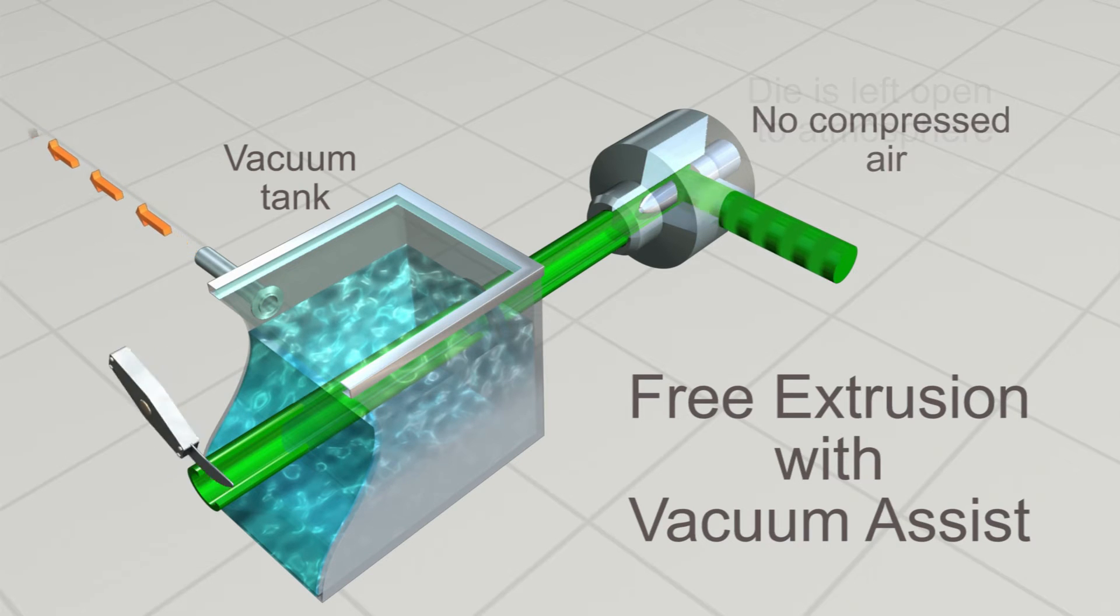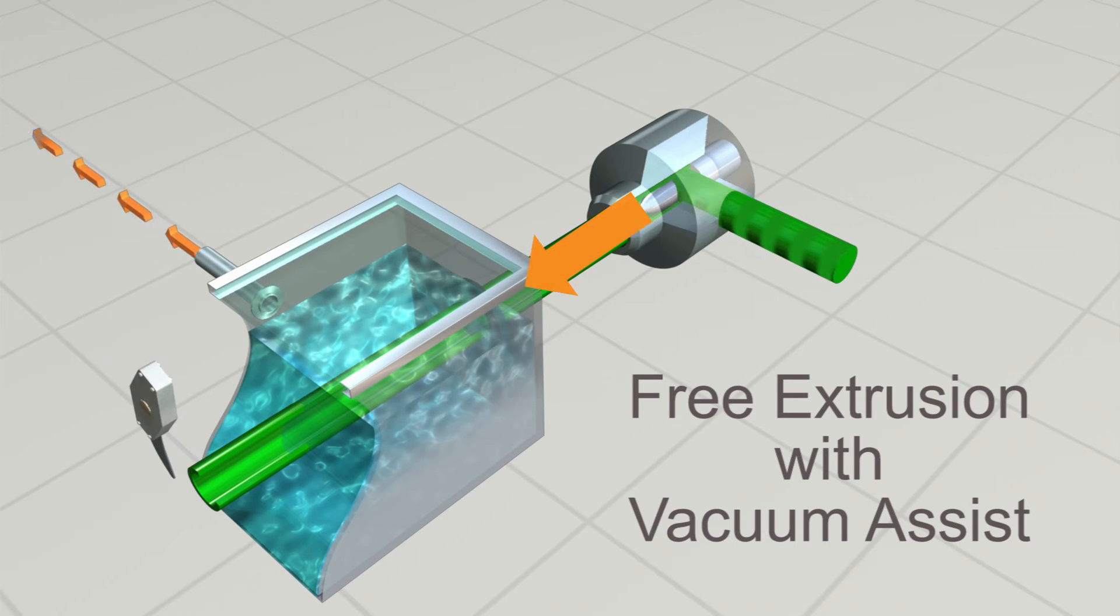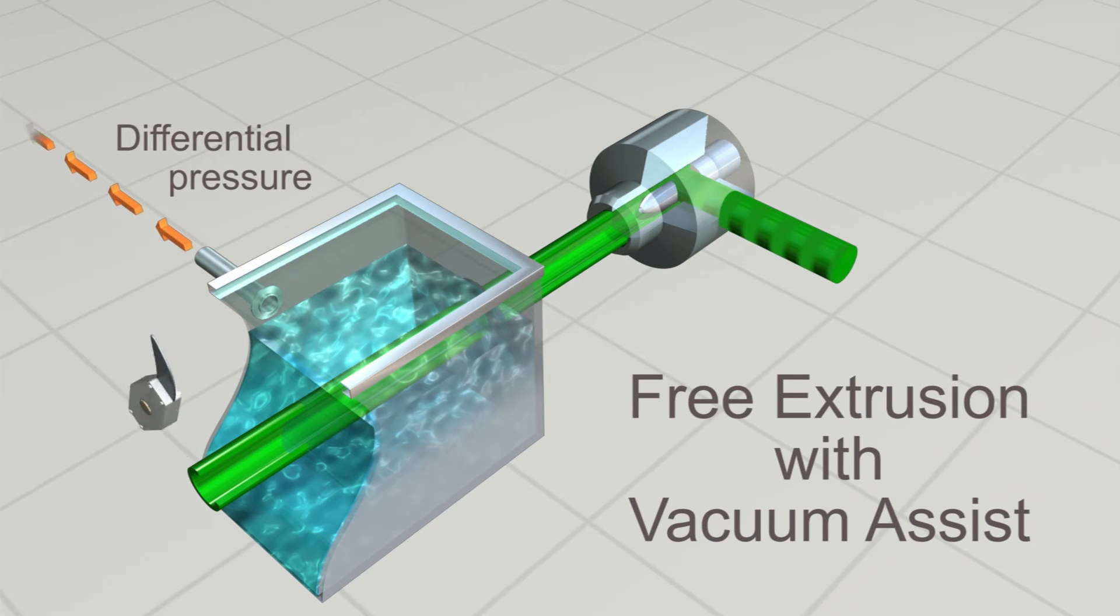In fact, the die is left open to atmosphere so the extruded tube is under no pressure. As the extruded tube enters the vacuum chamber, differential pressure is employed to accurately size the tubing, with similar results as inflation with free air.